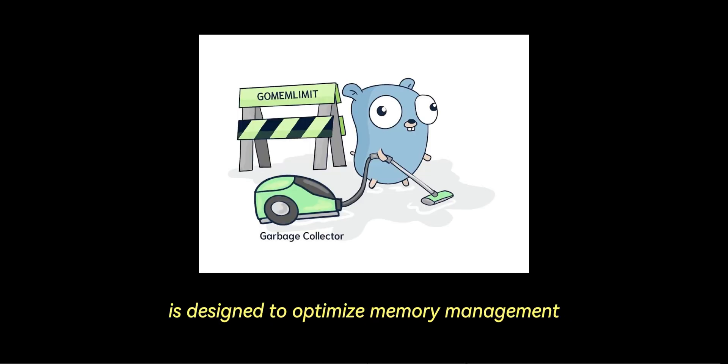Go's garbage collection is designed to optimize memory management by efficiently distinguishing between short-lived and long-lived objects without explicitly categorizing them into generations. Through techniques like scope-based reachability, escape analysis, and heuristics on object lifetimes, Go's garbage collector frequently reclaims memory from short-lived objects while revisiting long-lived objects less often.